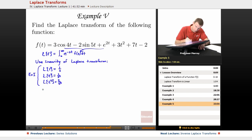L of e to the at is 1 over s minus a. So that, I believe, was example 2. L of cosine of at, worked that one out in example 3, and that was s over a squared plus s squared. And finally, L of sine of at was a over a squared plus s squared, and we worked that one out in example 4.